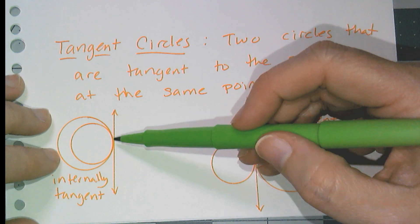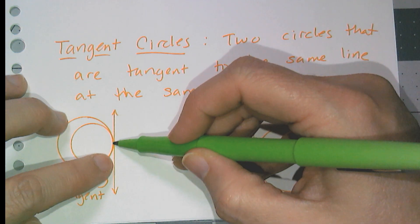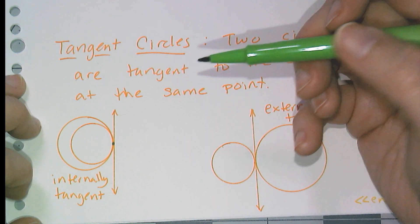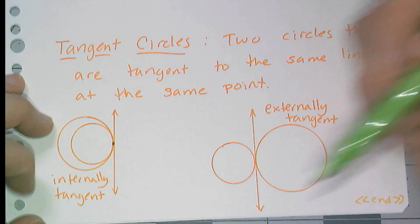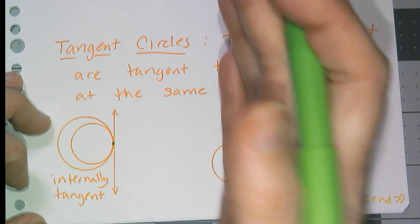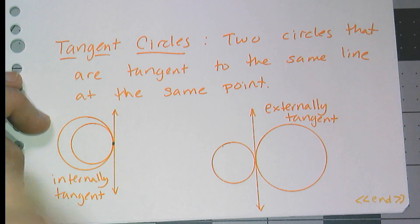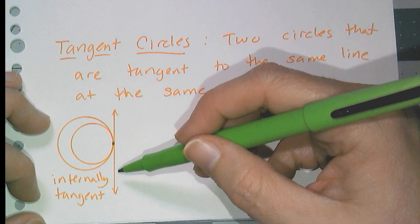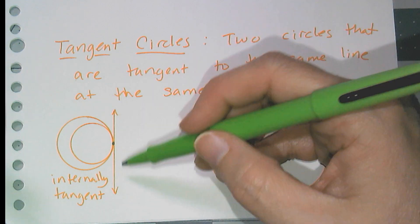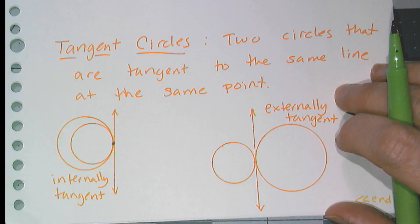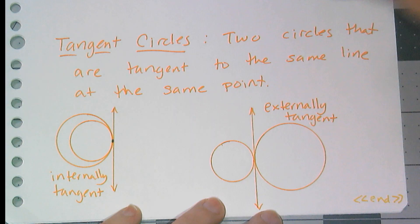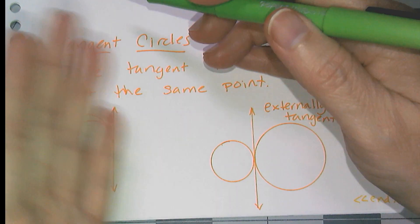Internally tangent, meaning that this is the point of tangency. One circle has a smaller radius. It's like inside the other circle, and they're on the same side of the tangent. That's what I mean by internally tangent. I got a scenario like this. Now they don't have to be different sizes. They can actually be the same size, which would be a weird trivial case, but it's possible. Internally tangent means same side of tangent.